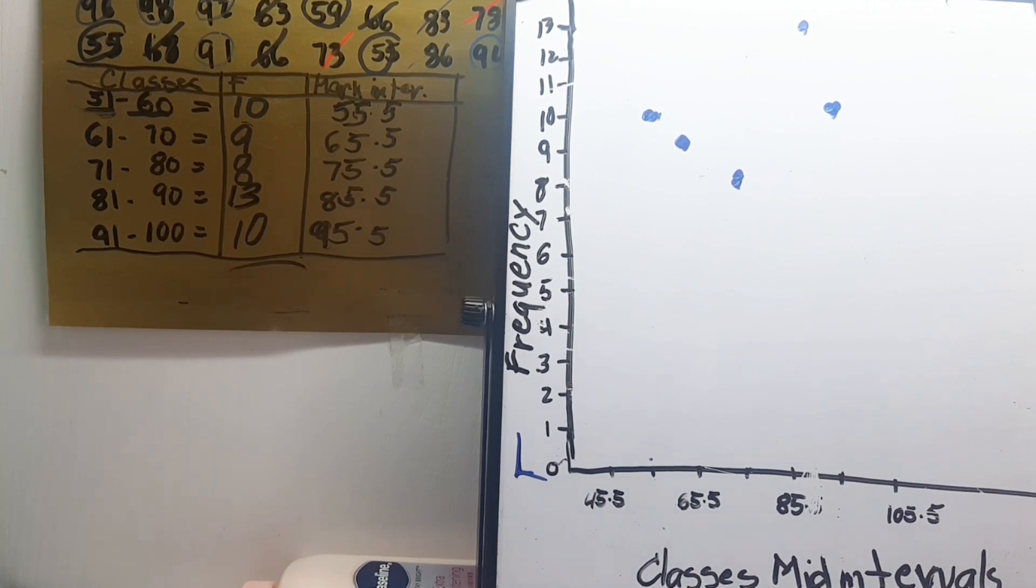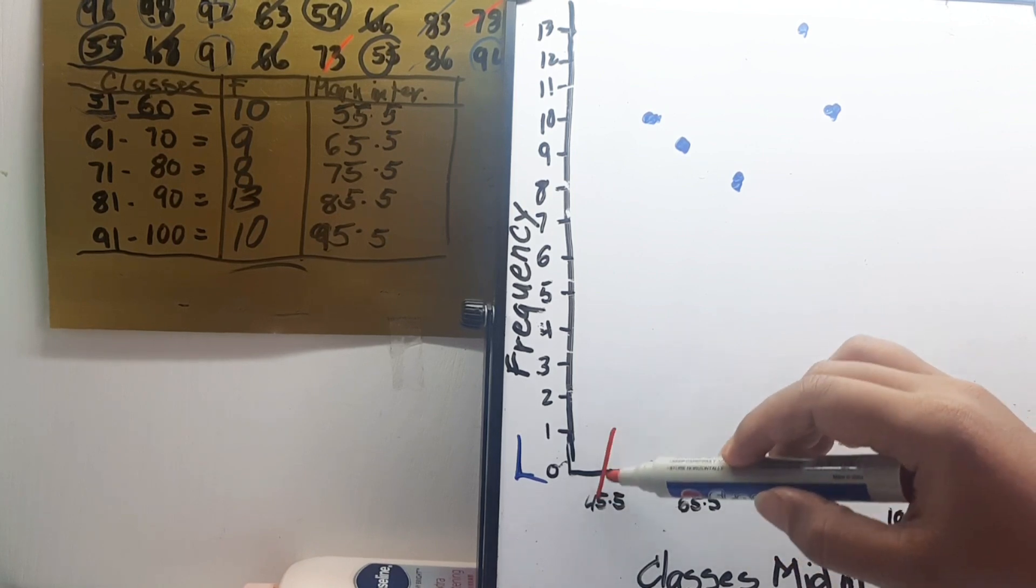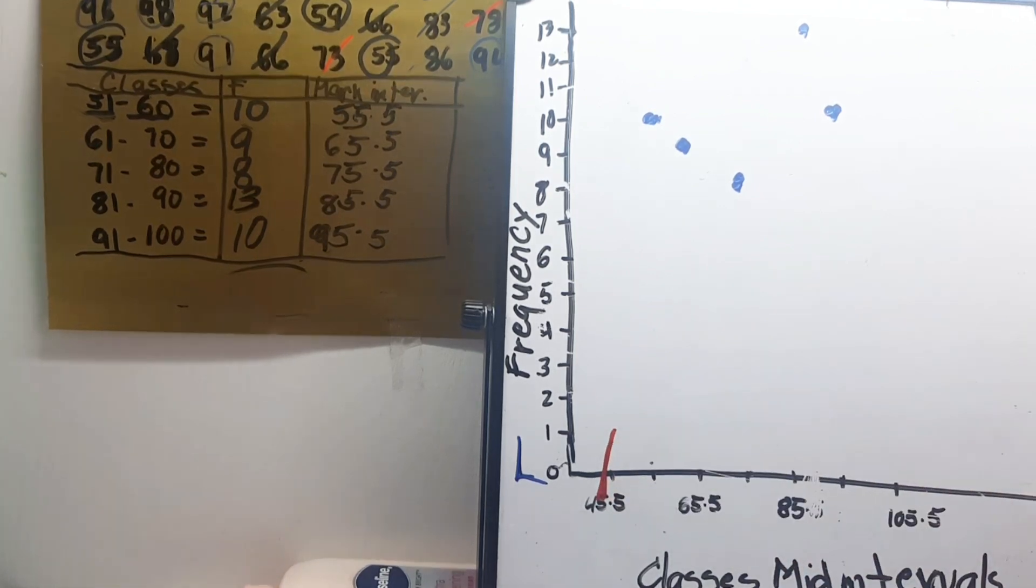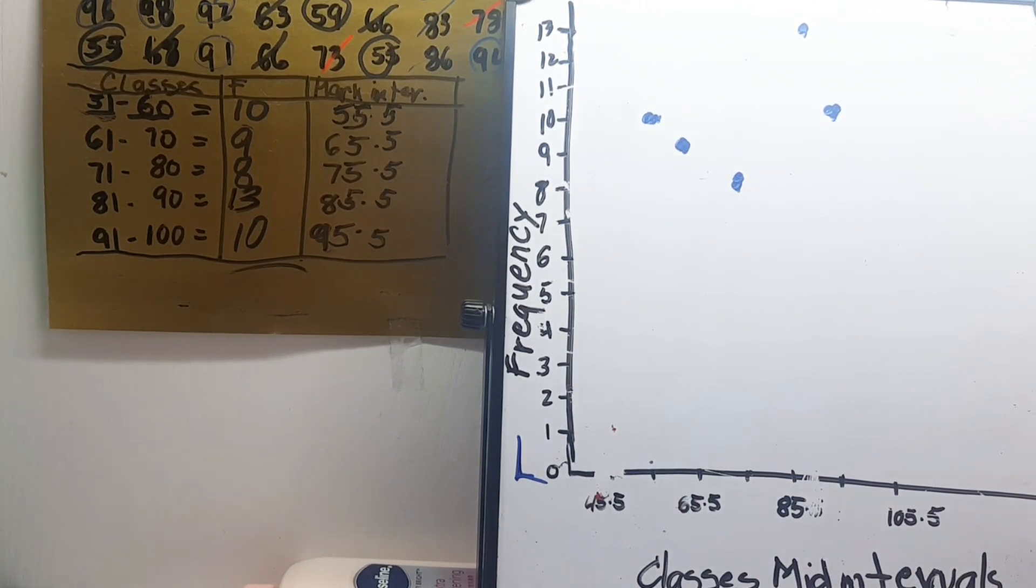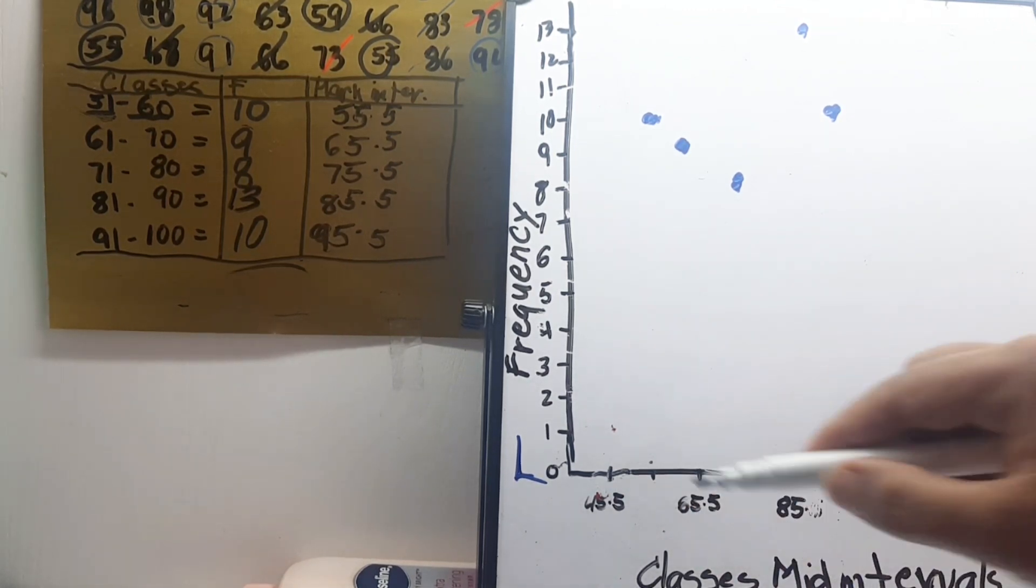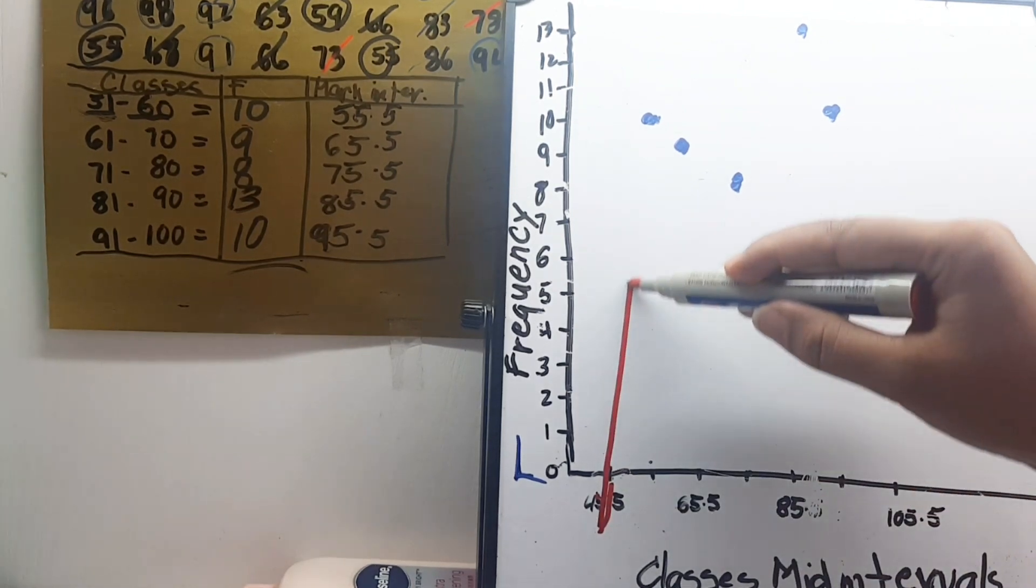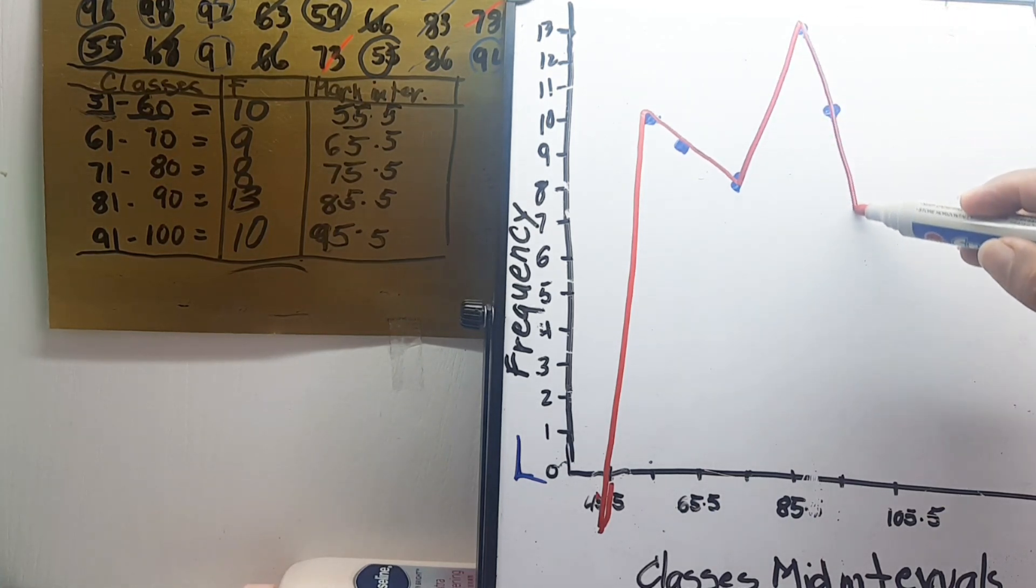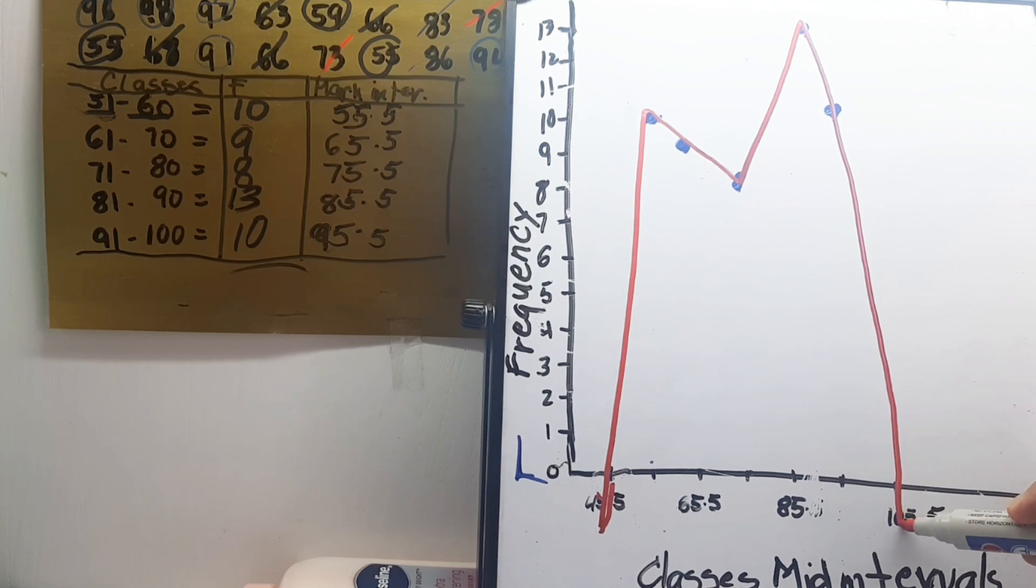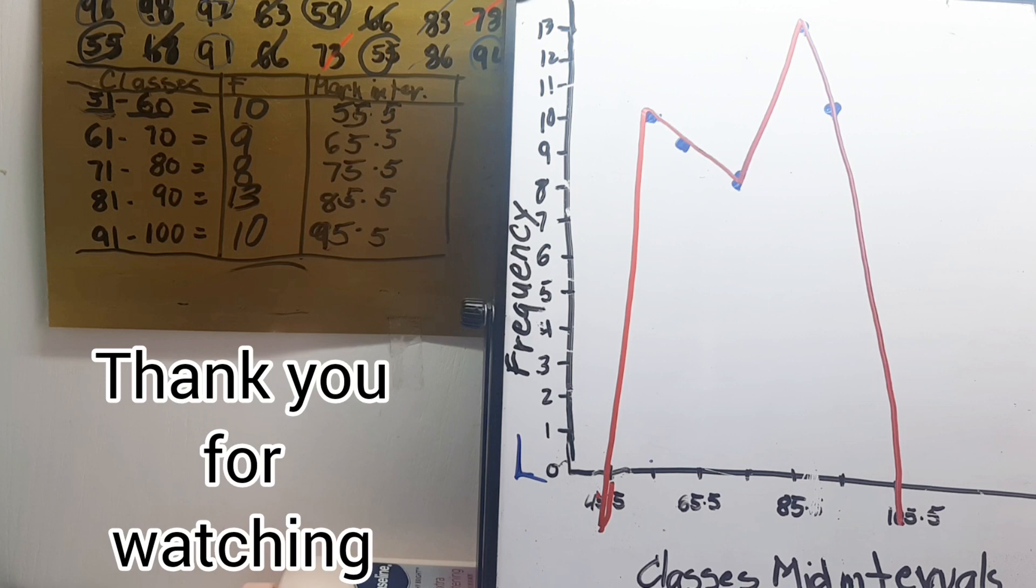So how to connect the line is you start from here. Oh wait, should be. Let's start here. And then connect the line. And the end will end here. It looks like that. So that is how to make a polygon graph.